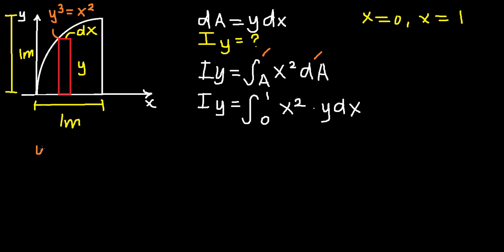So over here we have y cubed equals x squared. We're solving for y. So basically we're just going to multiply both sides by 1 over 3. Our answer is going to be y equals x^(2/3). So now we have a y that we can plug in here, which is in terms of x.